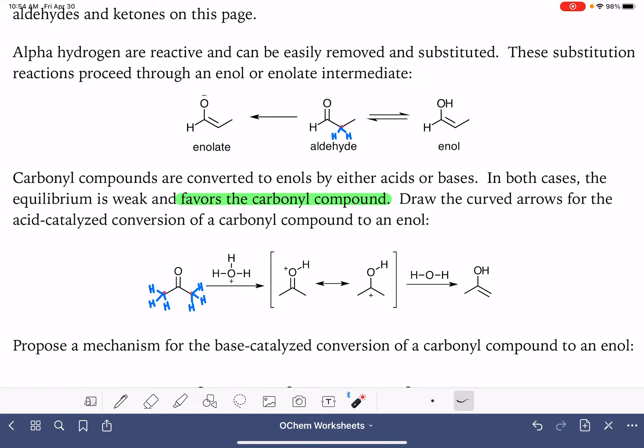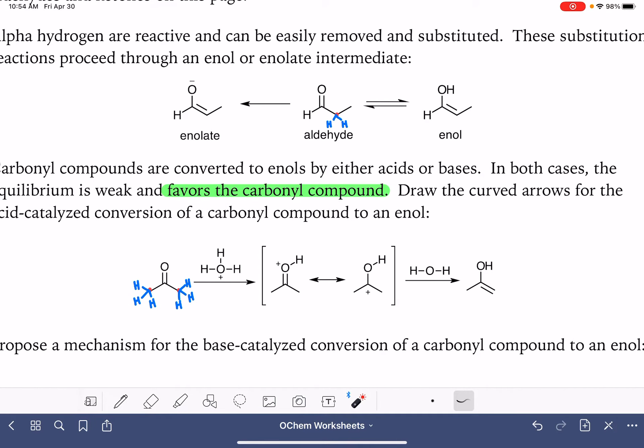Let's draw the curved arrows to show the formation of this particular enol. So as you know, whenever you have an oxygen atom in the presence of an acid, the very first thing that would happen is protonation of that oxygen atom. And this is what we get right here. Here's our intermediate with the protonated oxygen. This has a resonance structure. We can move the lone pair of electrons up onto the oxygen atom that delocalizes the positive charge from the oxygen down onto the carbon atom.